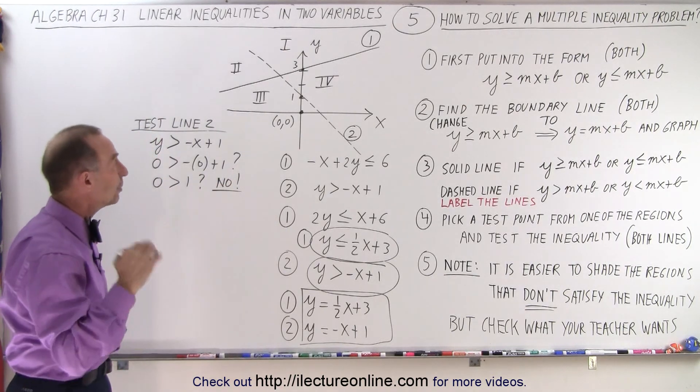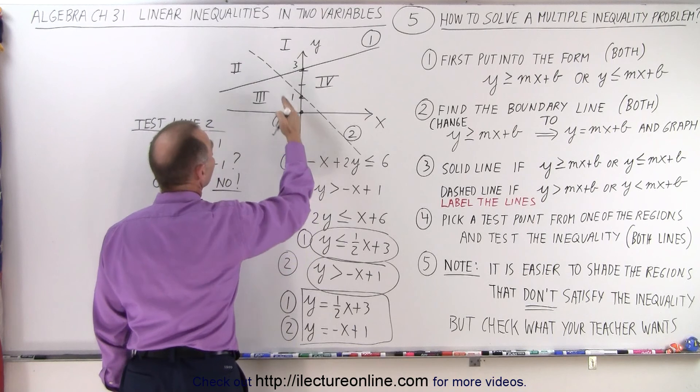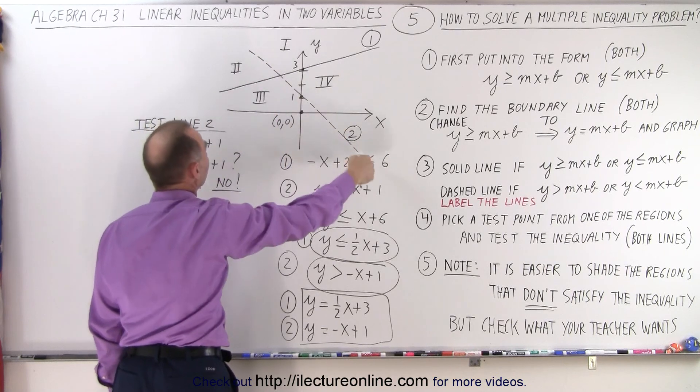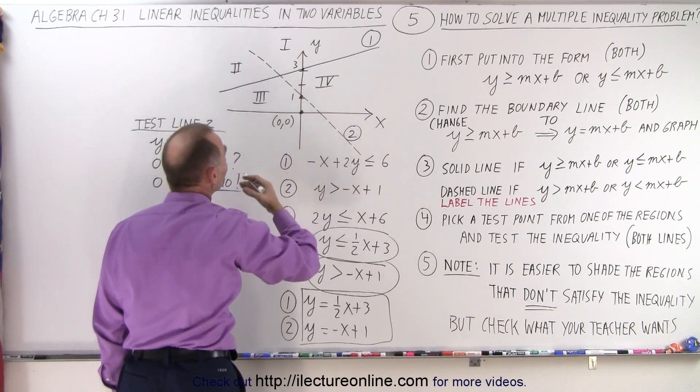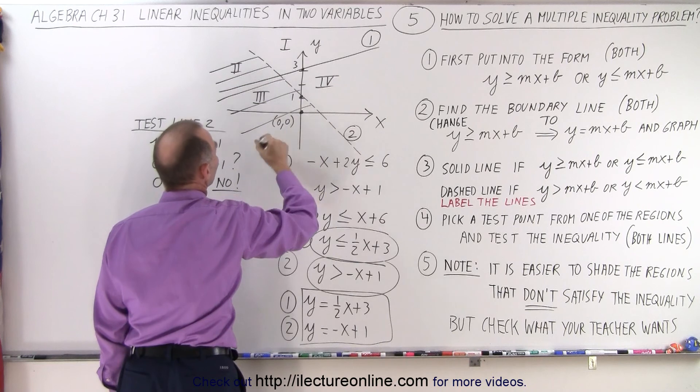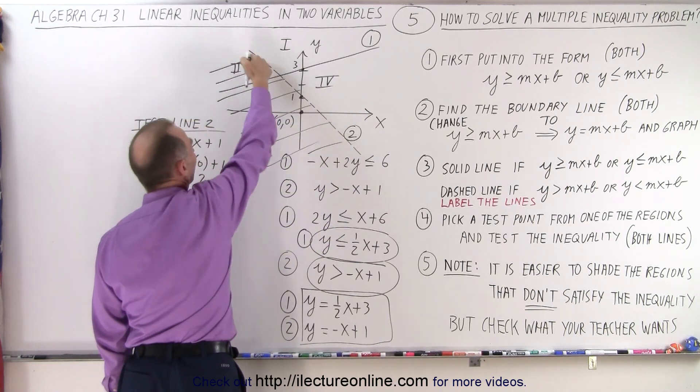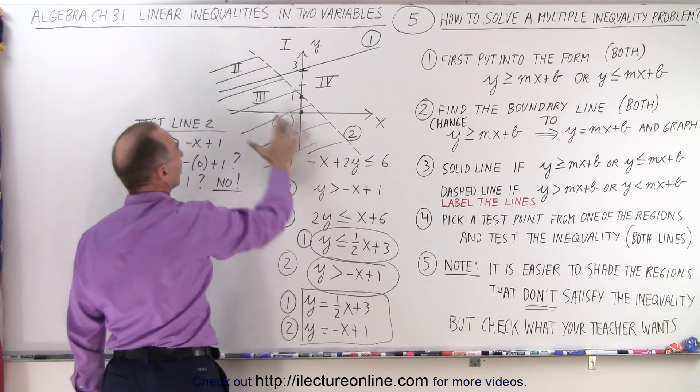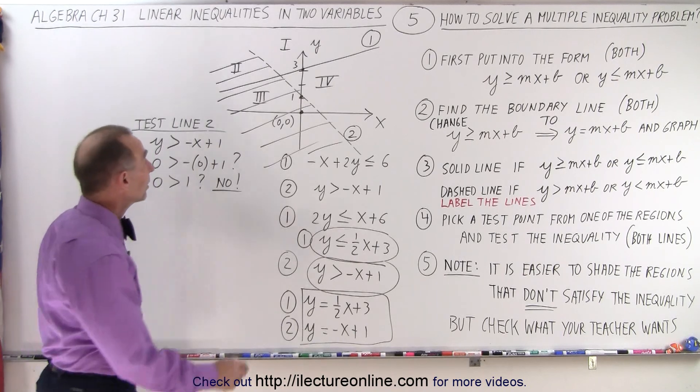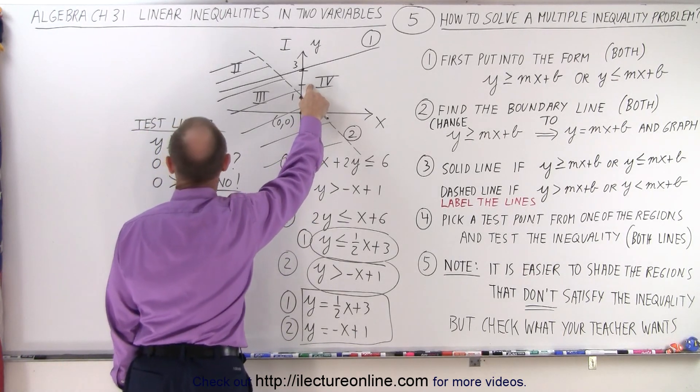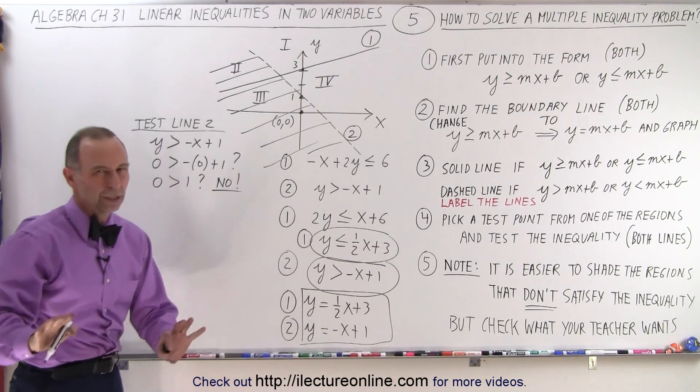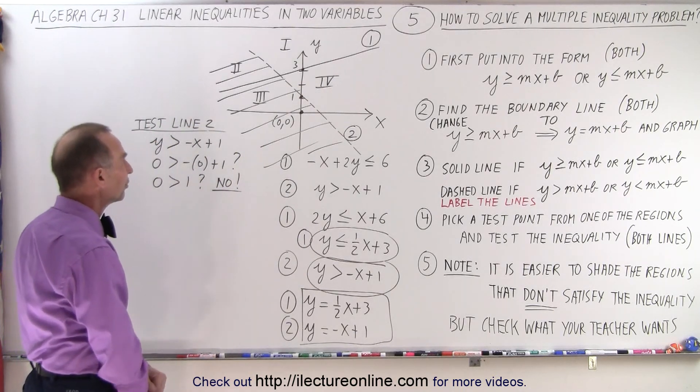So I picked a point in the region that does not satisfy inequality number 2. Since this is the dividing line of inequality number 2, that means this entire region does not satisfy that inequality. So let's go ahead and shade it. You can do a quick check on the other side. Let's take this point at (0,2) and plug it in. 2 is greater than 1, so yes, this point does satisfy the inequality.